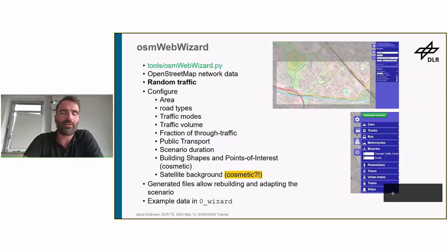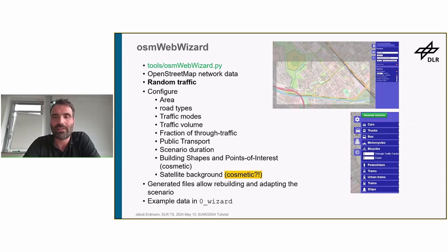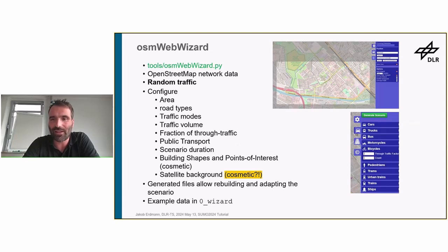First of all, OSM Web Wizard. This is our tool to get you started with the Sumo simulation with about three clicks. It's a Python application that you can launch from your start menu if you've installed Sumo, or you can find it in the Sumo tools folder. Upon launching it, it will open up a web browser and show your map — basically an OpenStreetMap-based rendering of the world. There you can select an area and modes of traffic that you want to see in your simulation. When you click 'generate scenario,' the data will be downloaded, processed, and Sumo GUI will open on your machine and you are ready to watch the simulation.